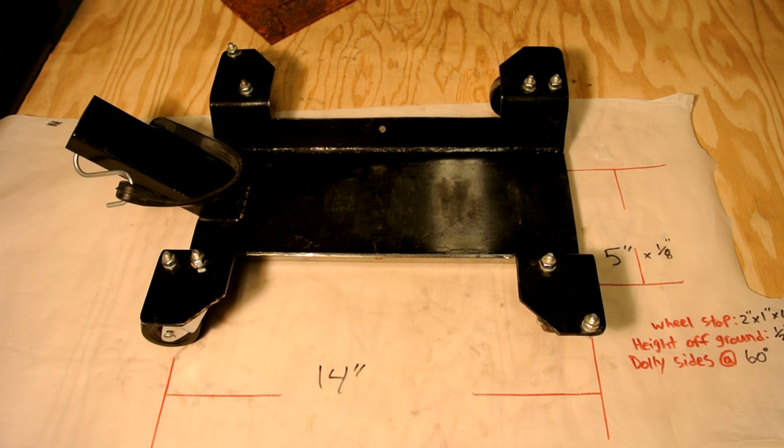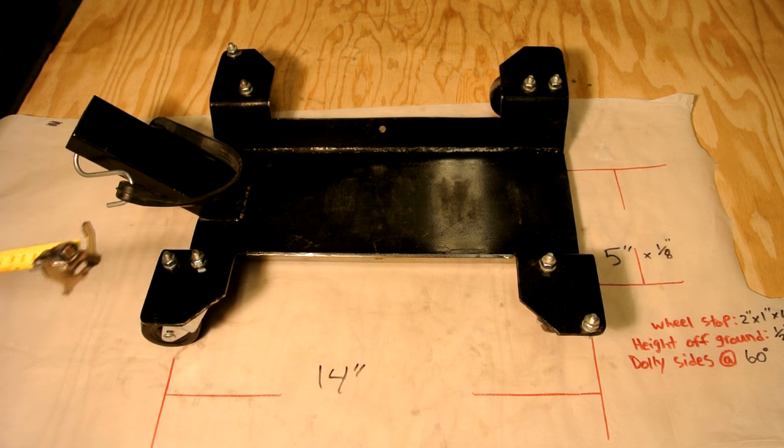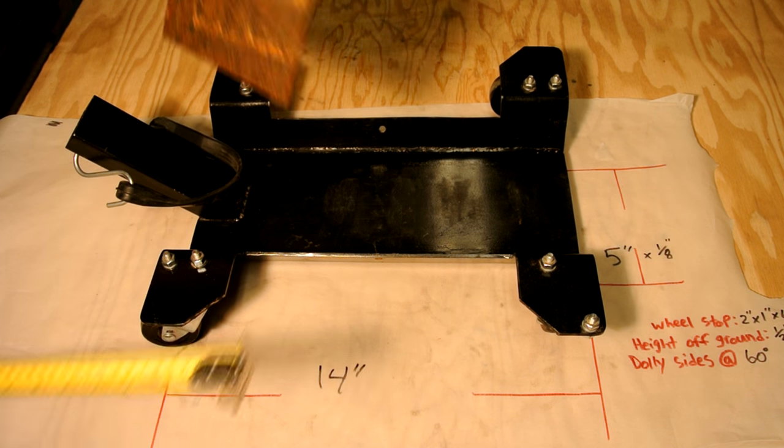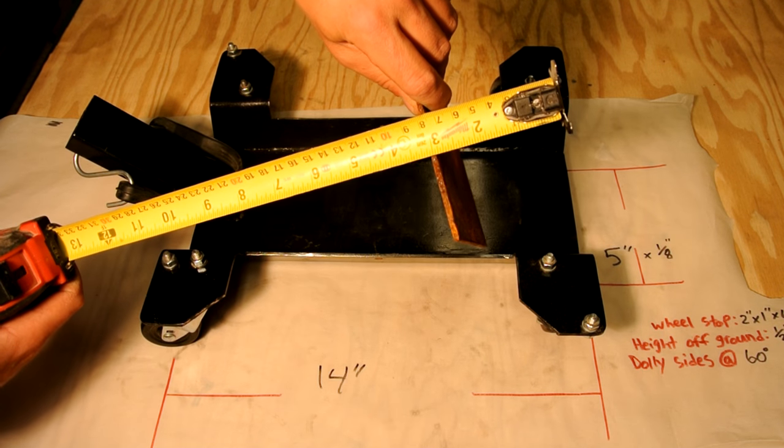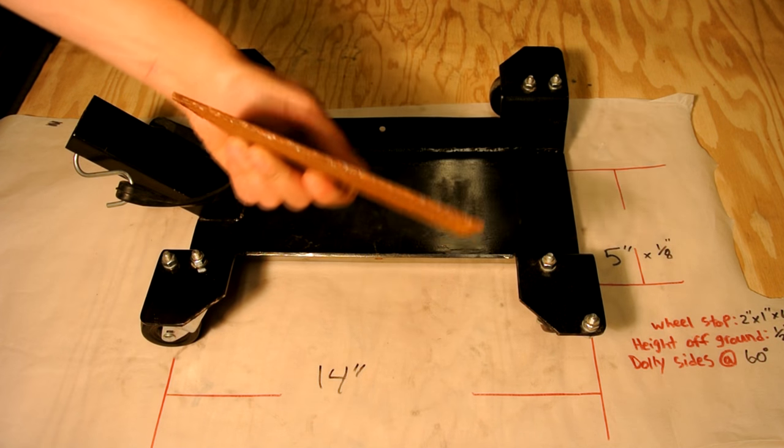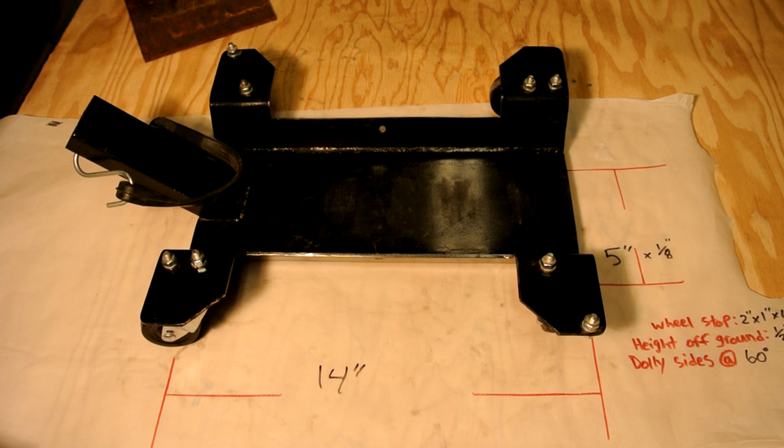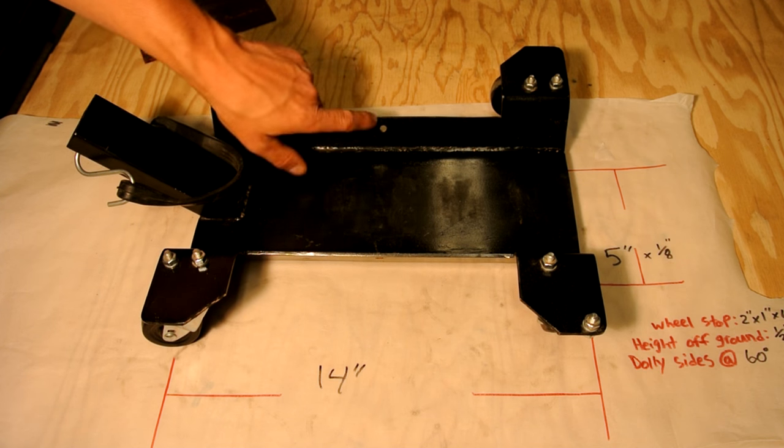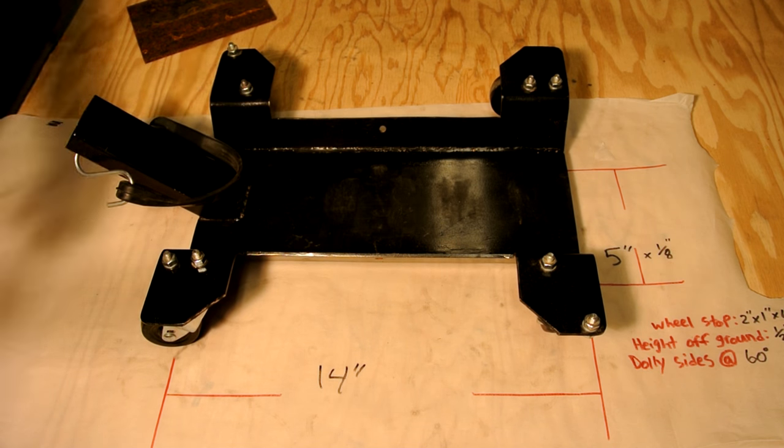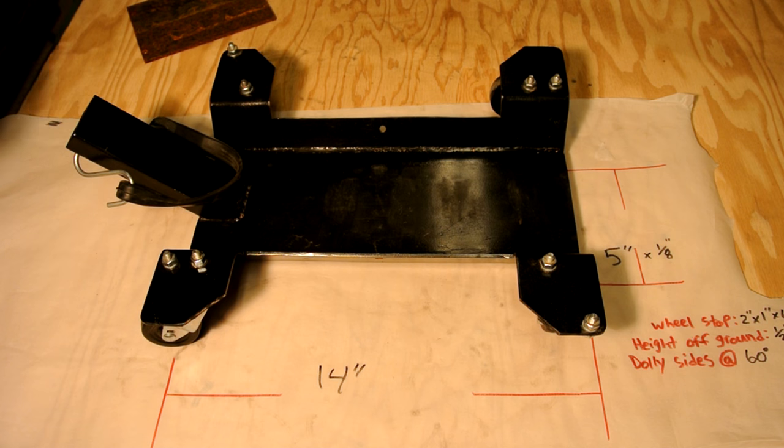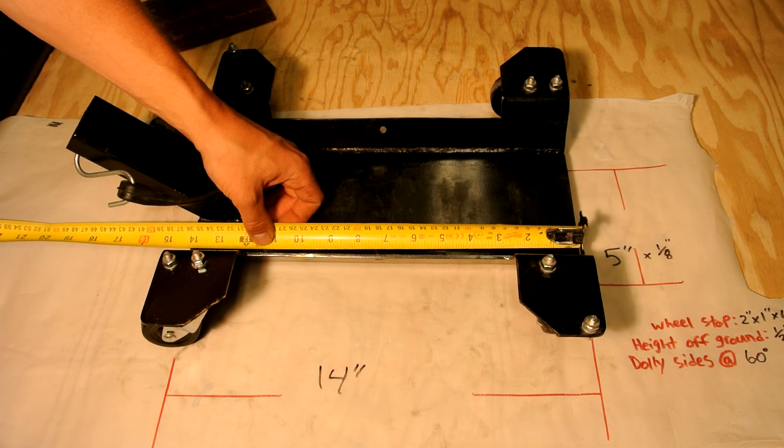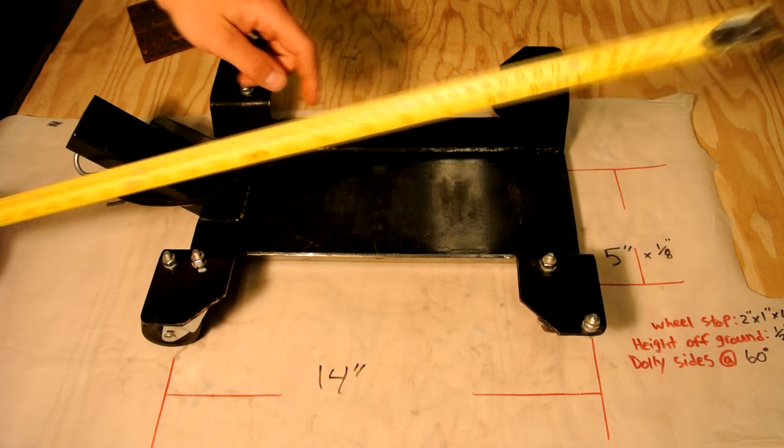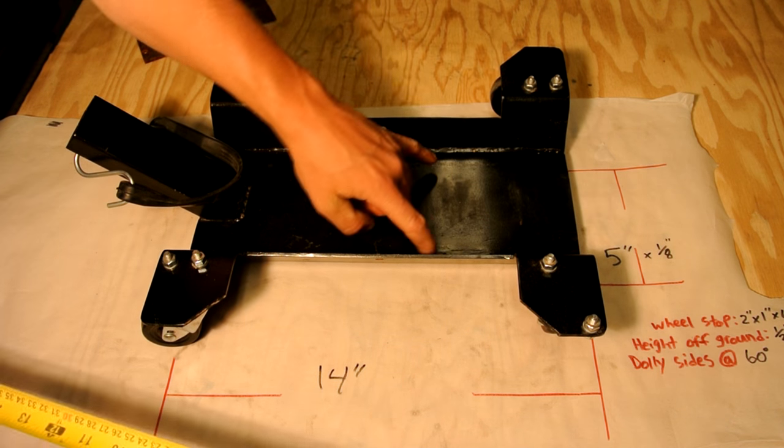Alright, so this is the measurements for the wheel dolly. Let's start off with the material I've used. I've used 5 inch by 8 inch flat stock steel. I've used that for the base and the two sides. For the base, I've cut that at 14 inches long by obviously the 5 inches wide.